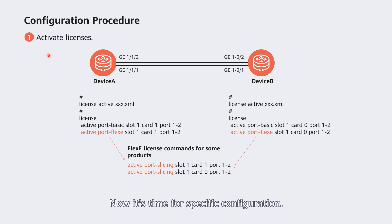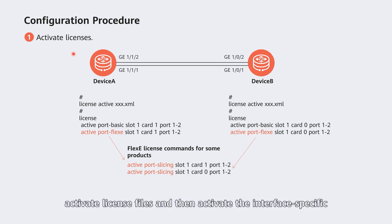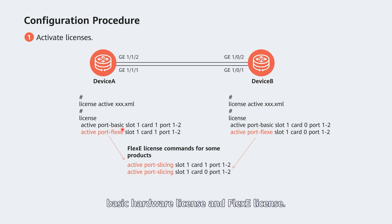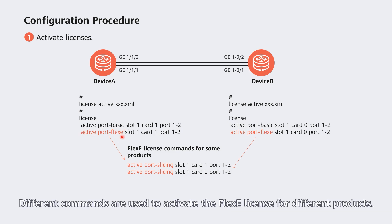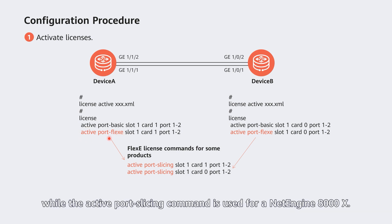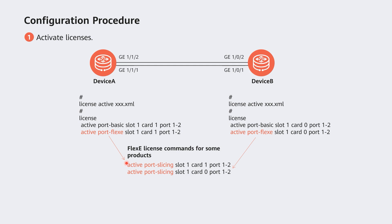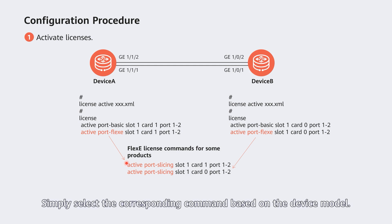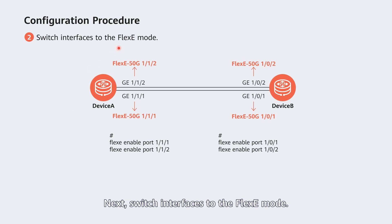Now for specific configuration: first activate licenses — activate license files, then activate the interface-specific basic hardware license and flexi license. Different commands are used to activate the flexi license for different products. For example, the 'active port flexi' command is used for an NE40E, while the 'active port slicing' command is used for a NetEngine 8000X. Simply select the corresponding command based on the device model.